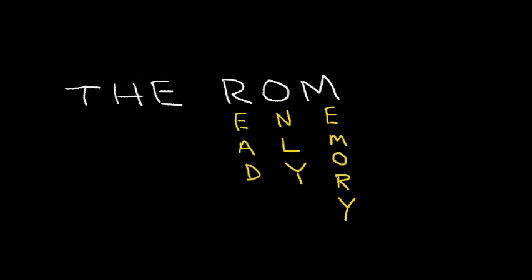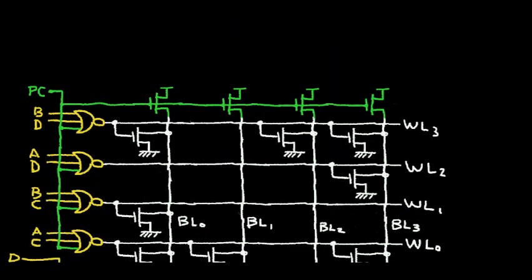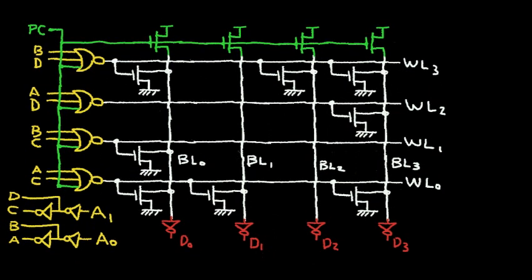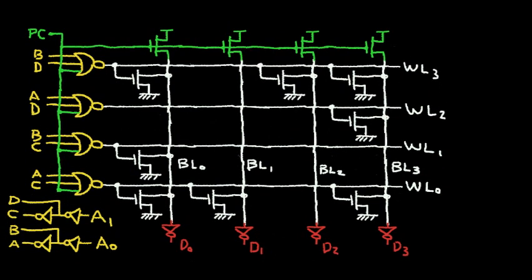So let's consider the structure of a typical read-only memory. Here I've sketched out a very simple ROM. There are many different ways to do a ROM. This is just one way it might be done. If you understand one way a ROM is done, you can probably understand all the other different ways that the ROM can be done.